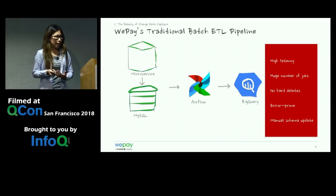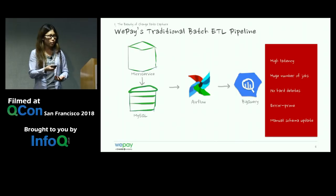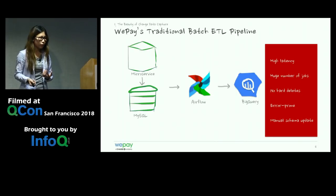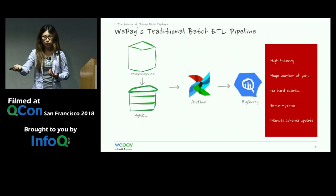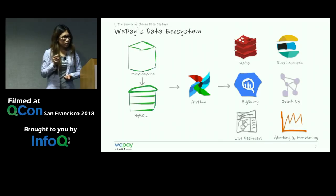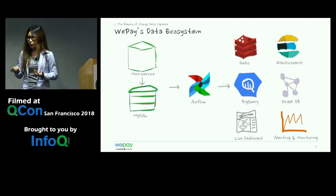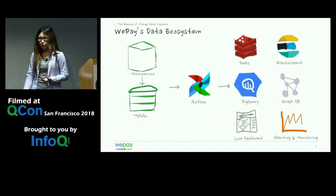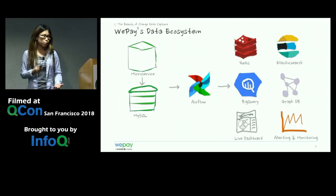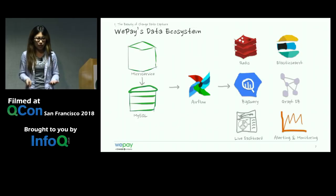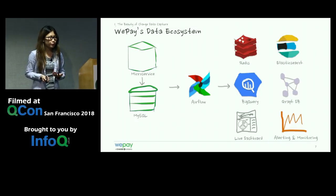Finally, schema management is manual. If a DBA adds a column to a table, Airflow doesn't know about it — we have to manually update the schema so it propagates to BigQuery. On top of all this, our data ecosystem is constantly evolving. We may add Redis for key-value cache, Elasticsearch for full-text search, a graph database for fraud detection, or live dashboards. Airflow is a batch-oriented tool and not meant for streaming, so we needed something better.